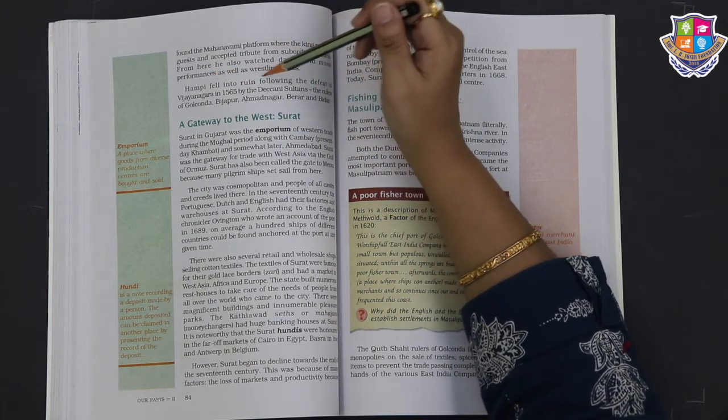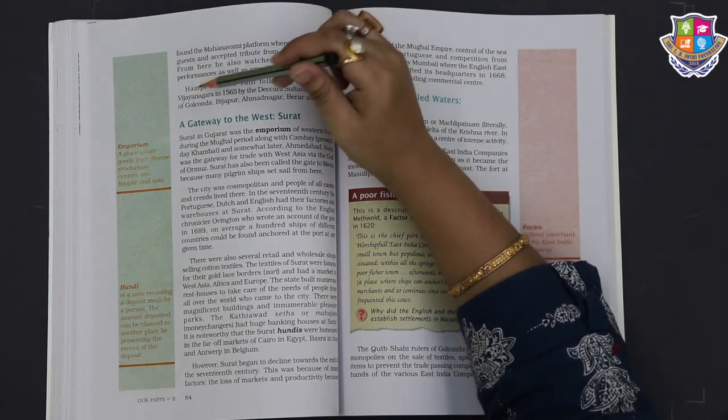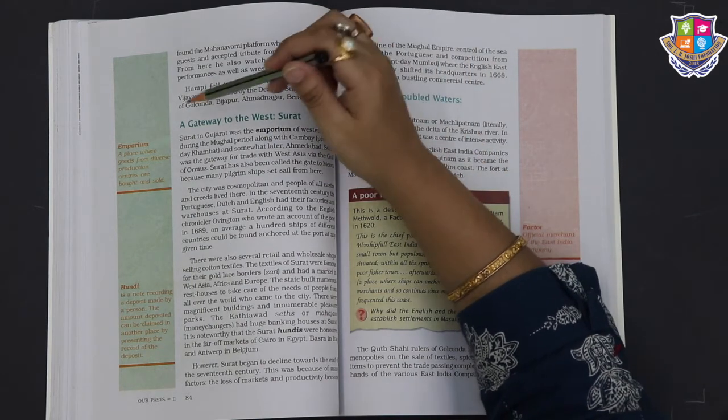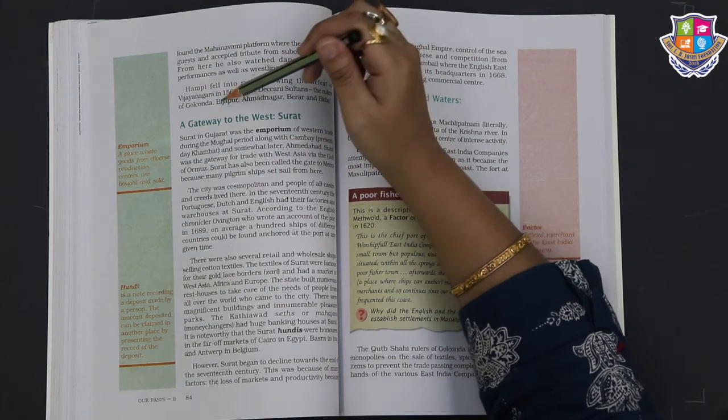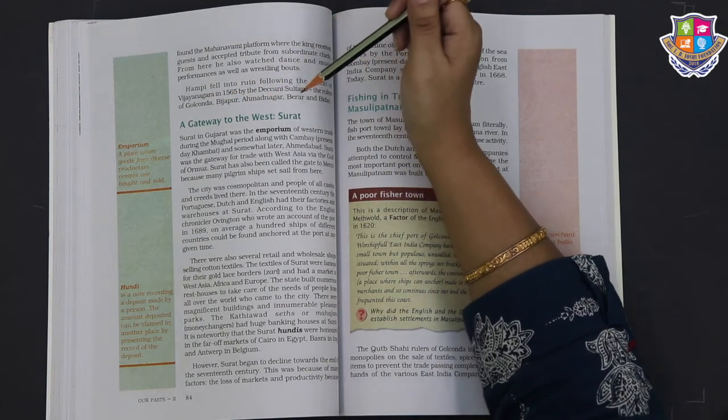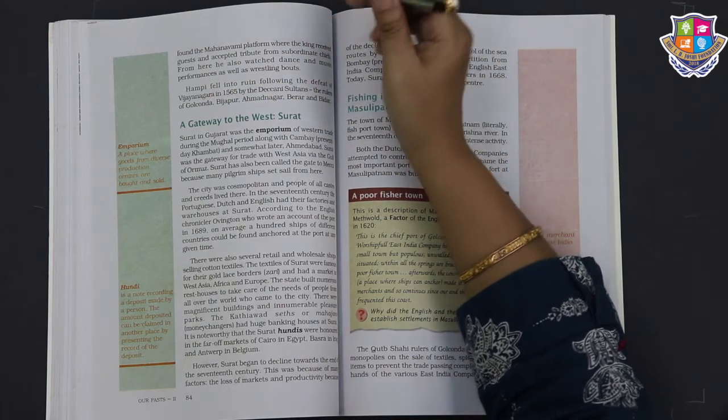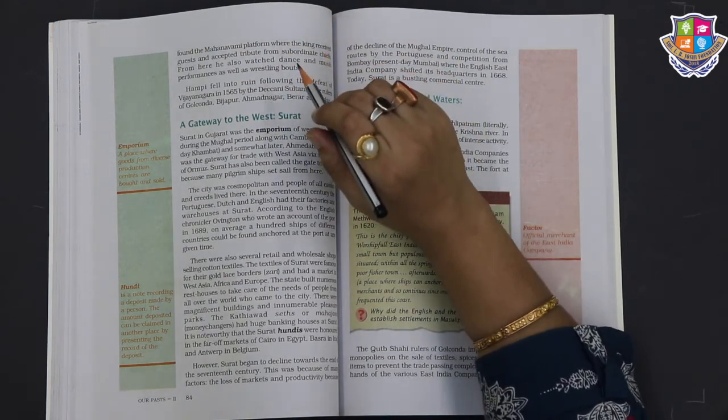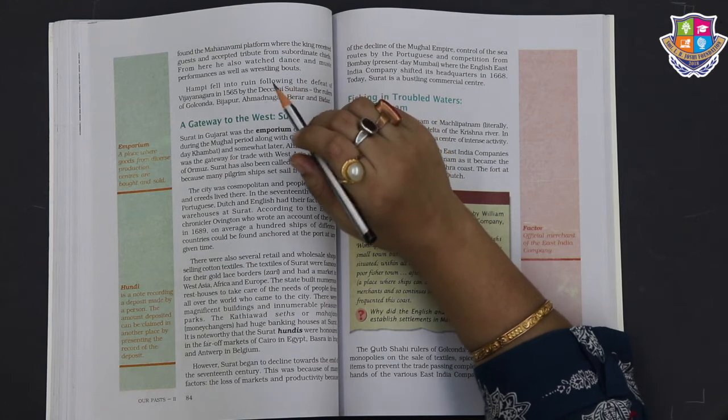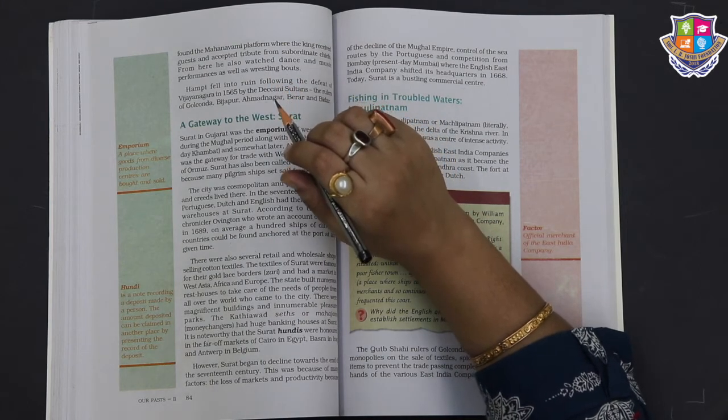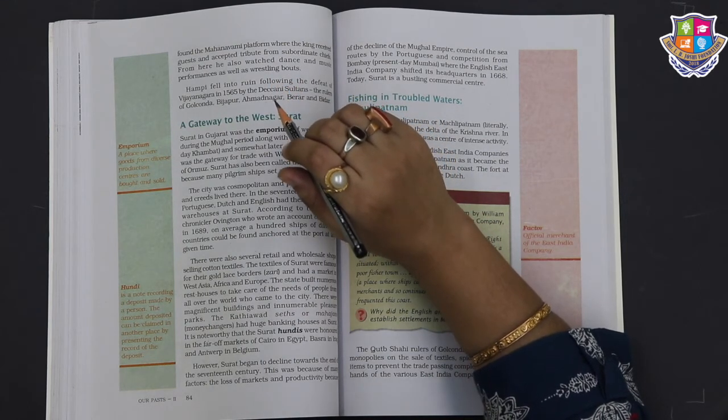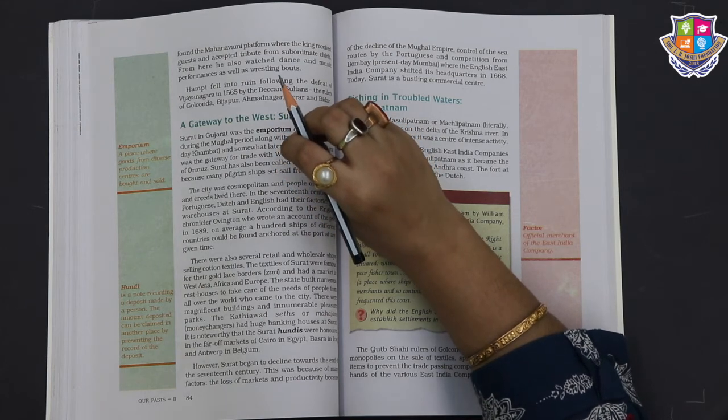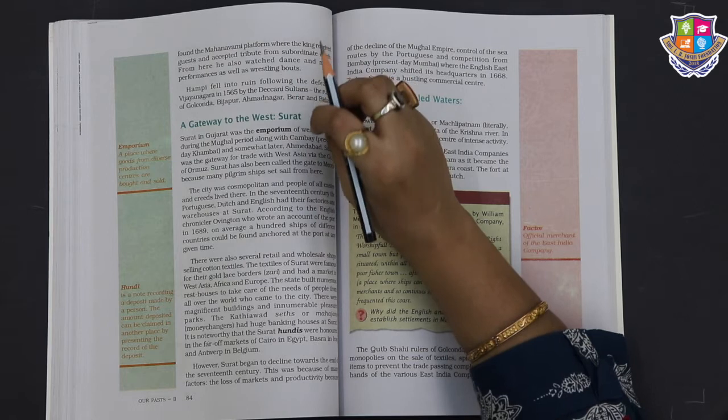Hampi fell into ruin following the defeat of Vijayanagara in 1565 by the Deccani Sultans - the rulers of Golconda, Bijapur, Ahmadnagar, Berar, and Bidar. Hampi was the capital of Vijayanagara Empire. The architecture of Hampi was distinctive. It bustled with commercial and cultural activities during the 15th to 16th century. Then Hampi fell into ruin following the defeat of Vijayanagara in 1565 by the Deccani Sultans.